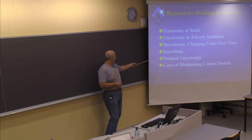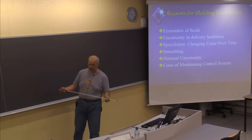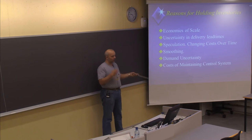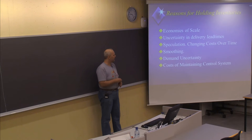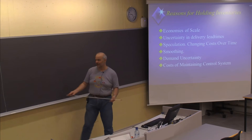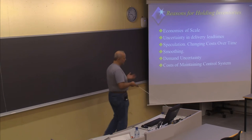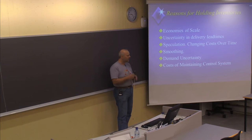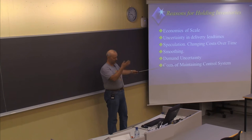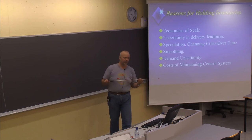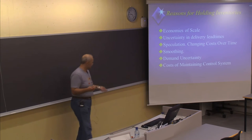Another reason is what we call smoothing — trying to level out production. This is more relevant when you are producing yourself rather than buying from an external vendor. For example, if you produce winter sport equipment, you will have the high season in winter, and it might be difficult to produce enough in that season to meet demand. So maybe you should use the summer to build up stock and then have something to sell when the winter season starts. This is also typical for other seasonal products.